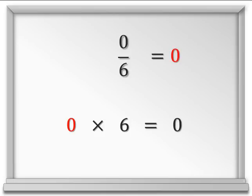In fact, we know that 0 times any number is equal to 0. So 0 divided by any number x is 0.